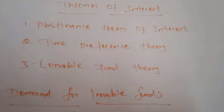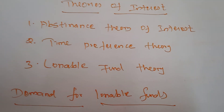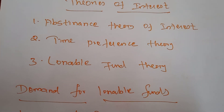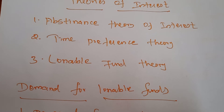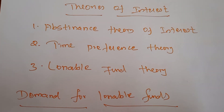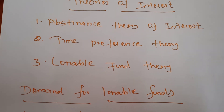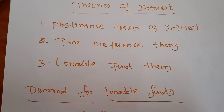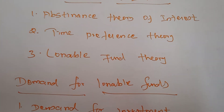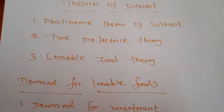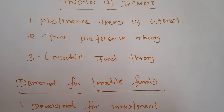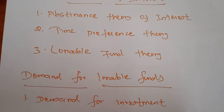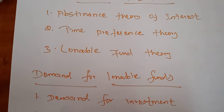The next theory is the Time Preference Theory. This theory is similar to the abstinence theory. This theory was propounded by John Ray in 1834, but credit goes to Bohm-Bawerk, an Austrian school economist, who gave final shape to the theory. The American economist Irving Fisher modified it and gave a new version of the time preference theory. According to this theory, people prefer present goods rather than future goods. Normally, most people want to consume in the present only and will never wait for future consumption, because the present goods are more certain than the future goods.